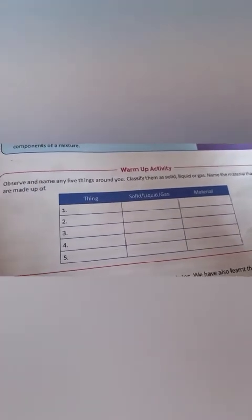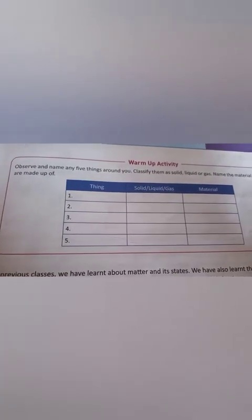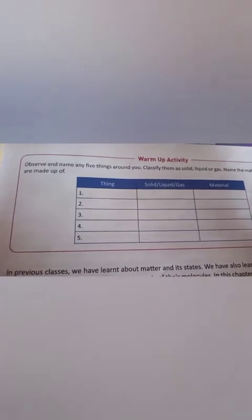We have already learned about matter and the three states of matter — solid, liquid and gas — in standard five. Today we'll revise once more the three states of matter and what is matter, and we'll see how we can classify matter on the basis of similarities and dissimilarities in their composition. Let's start the chapter.